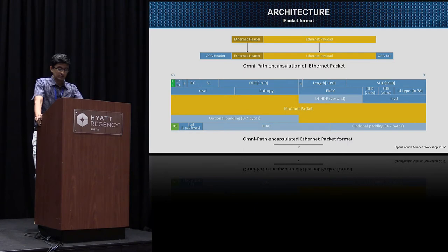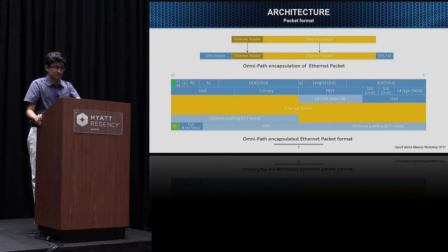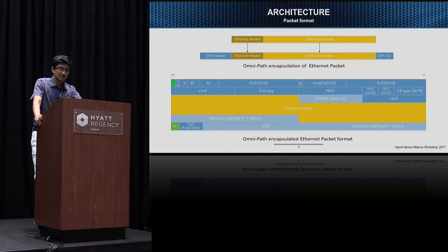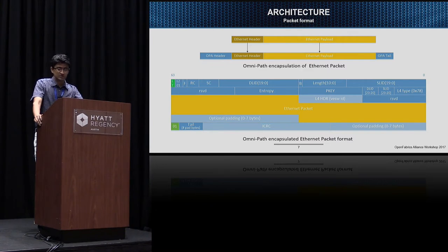The whole packet must be flit aligned, which is quad-word aligned, so some optional padding is required. The maximum padding required is seven bytes. There is a tile byte in the tile which contains the amount of padding required so that the receive side can strip it off. On the receive side, it will strip off the tail and the header, and push only the Ethernet packet up the network stack.